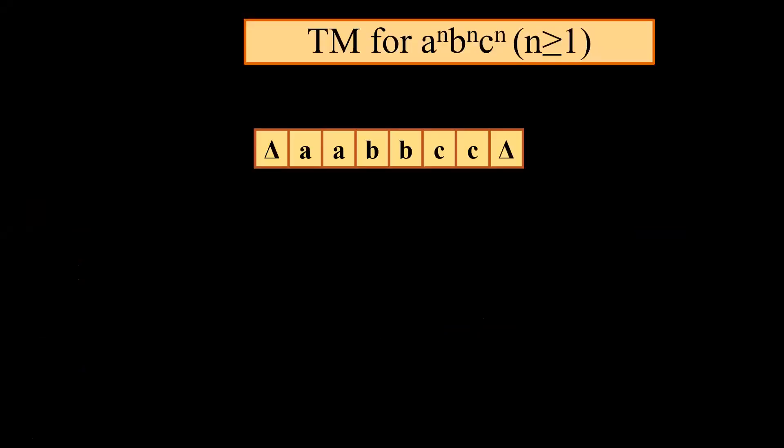I hope you all remember that when we talked about pushdown automata, we proved with the help of the pumping lemma that Aⁿ Bⁿ Cⁿ is not context-free and we cannot draw a pushdown automata for Aⁿ Bⁿ Cⁿ.